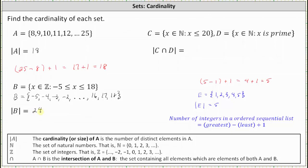Or again, if we want to use the formula, we would have 18 minus negative 5 plus 1. Well, 18 minus negative 5 simplifies to 18 plus 5 or 23. 23 plus 1 is equal to 24.